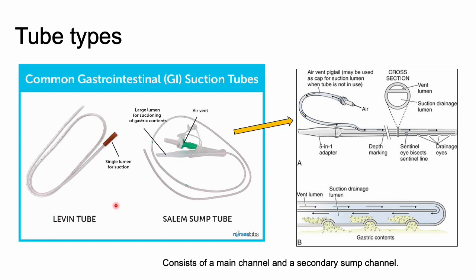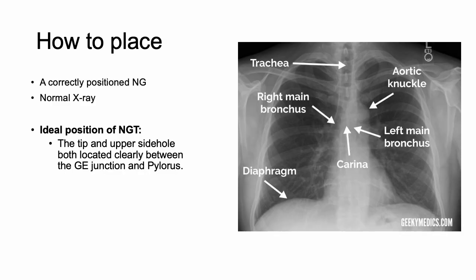The Salem sump tube consists of a main channel and a secondary sump channel, which is an air vent port. No medications can go down here — it helps equalize the pressure and prevents the tube from adhering to the stomach wall. This is why some institutions can use continuous suction: the secondary channel prevents adherence. With the Levin tube's single channel, you would use intermittent low suction so the tube can pop off the stomach wall.